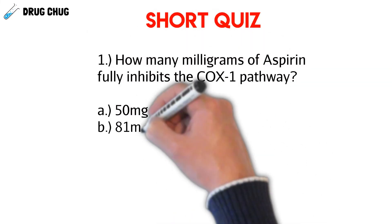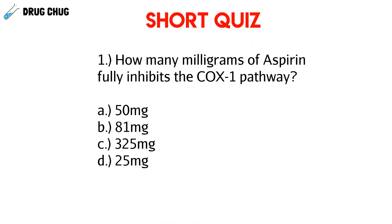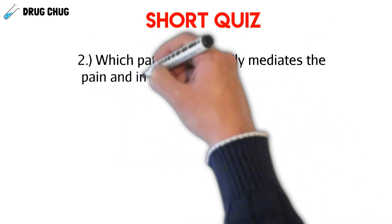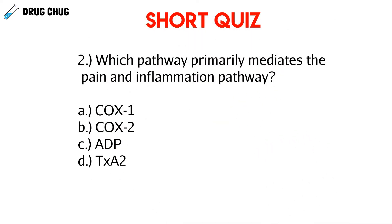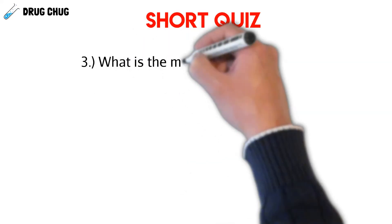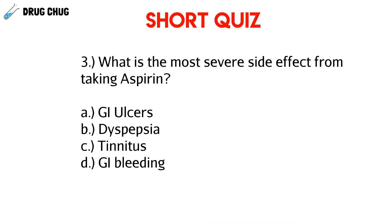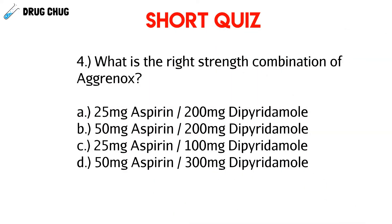Quiz questions: How many milligrams of aspirin fully inhibits the COX-1 pathway? Which pathway primarily mediates pain and inflammation? What is the most severe side effect from taking aspirin? What is the correct strength combination for Aggrenox?